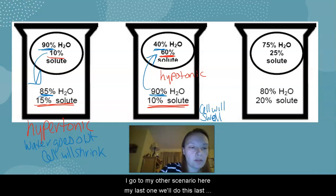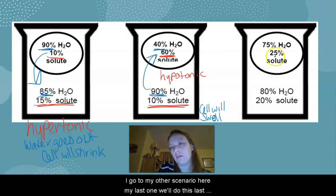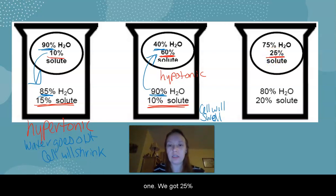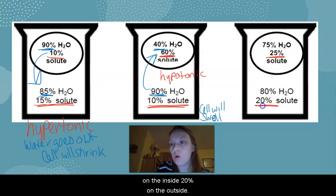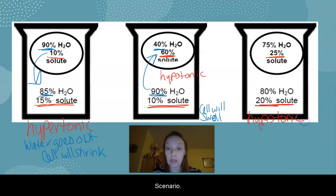If I go to my other scenario here, my last one, we'll do this last one, we got 25% on the inside, 20% on the outside. 20% on the outside is lower than 25%, so we have another hypotonic scenario.